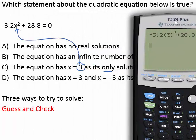Now the problem is it says as its only solution. So we need to check d now as well. So let's go ahead and check d. D means we're going to check 3. We've already done that. It works. Let's check negative 3.